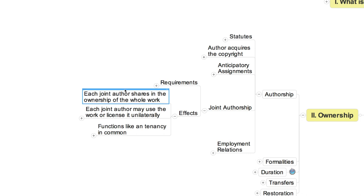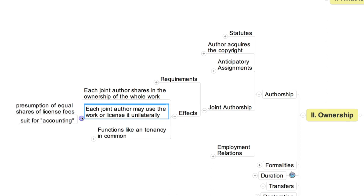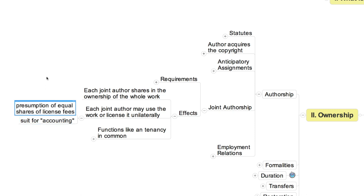Each author, in such cases, is said to be an owner of the whole work, not just the part he or she contributed. Each is free to use the work or to license others to use it. If one of the joint authors licenses it unilaterally and collects license fees, he or she must give the other joint author or authors appropriate shares. If he fails to do so, he's subject to a suit for accounting. The presumption is that each one is entitled to an equal share, even if their contributions have clearly been unequal in amount. However, this presumption of equality can be overridden by an agreement among the joint authors.